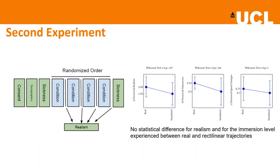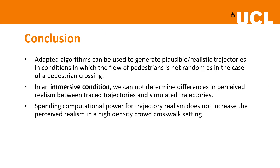For the second experiment, we developed an application within Unity targeting Oculus Quest 1 or 2. Participants were asked to evaluate the realism of synthetic and real data in an immersive scenario, or an aerial view displayed on a screen in a VR environment. Perceived realism was recorded via the same questions as the first experiment. Results showed no statistical difference between the perceived realism of rectilinear trajectories and real trajectories, and no statistical difference in the immersion level experienced between the two conditions.